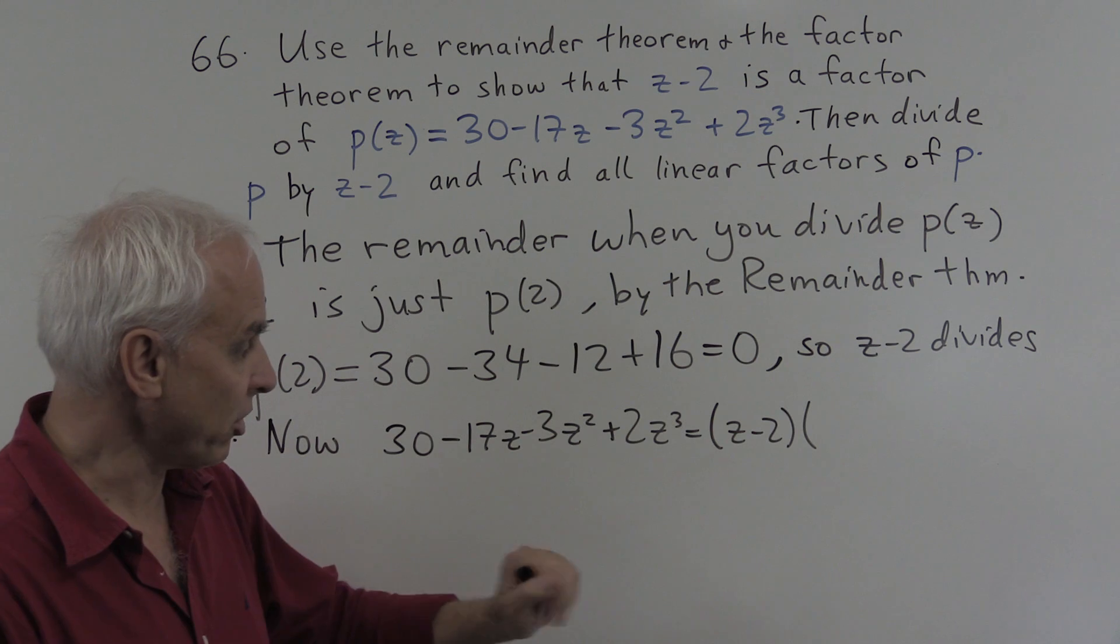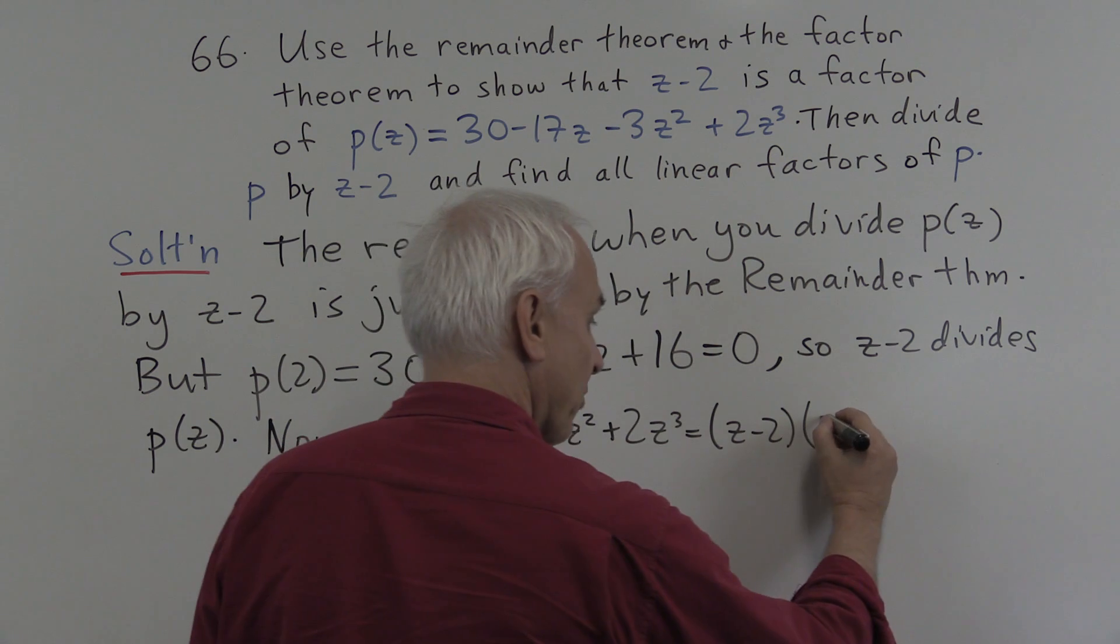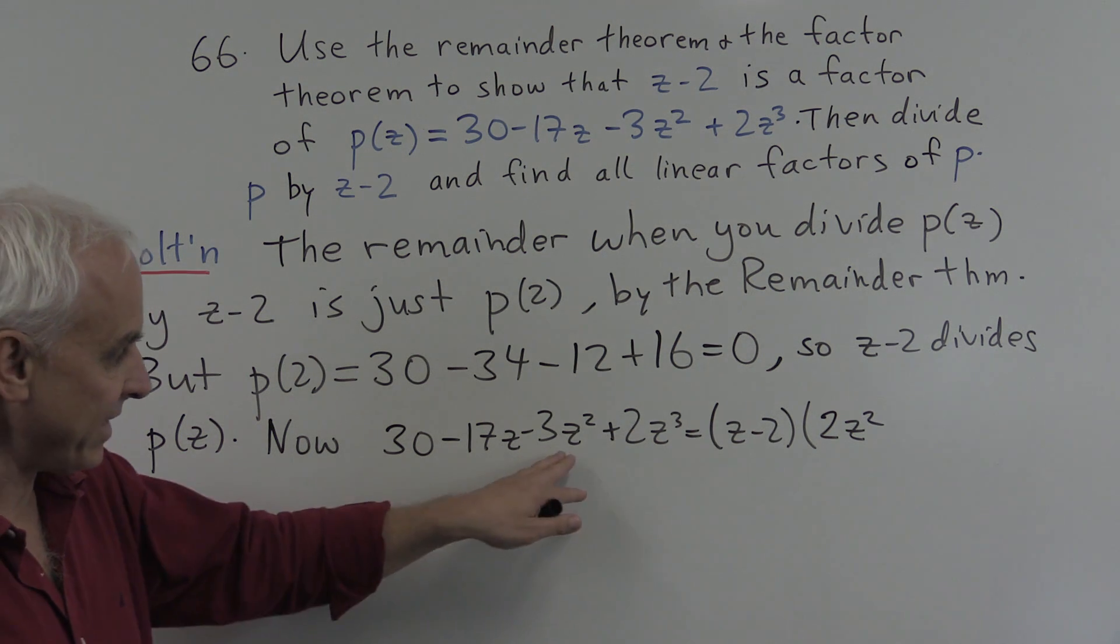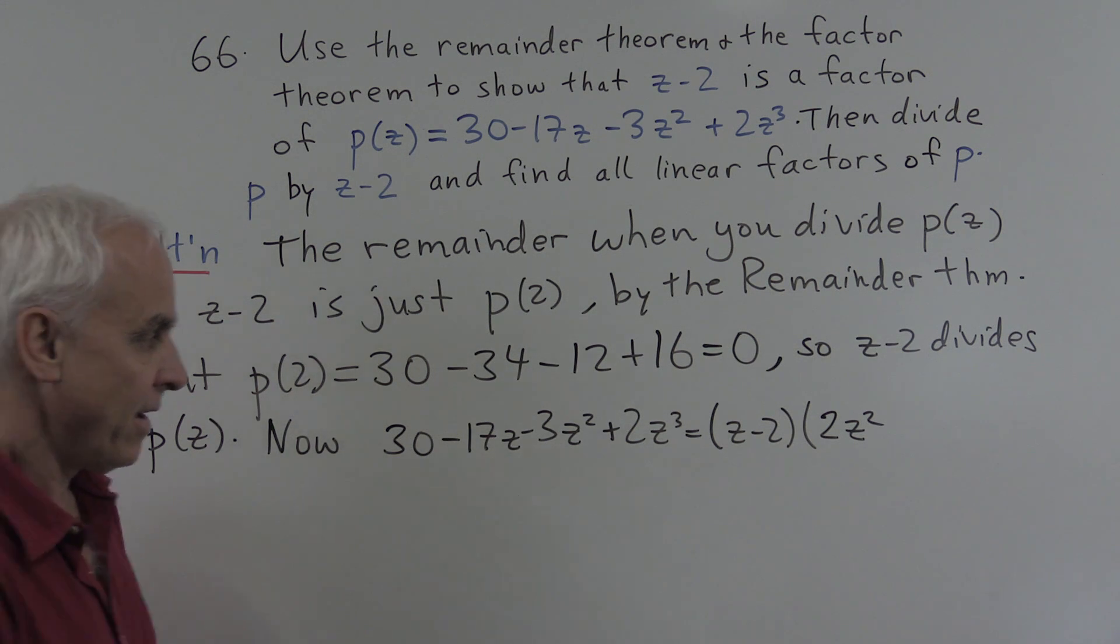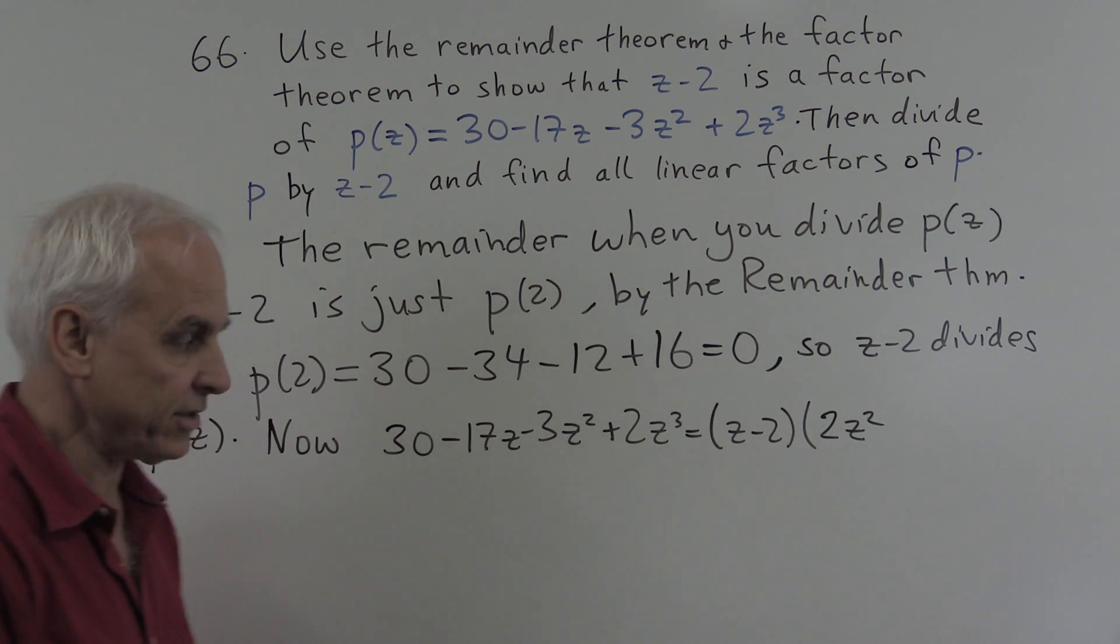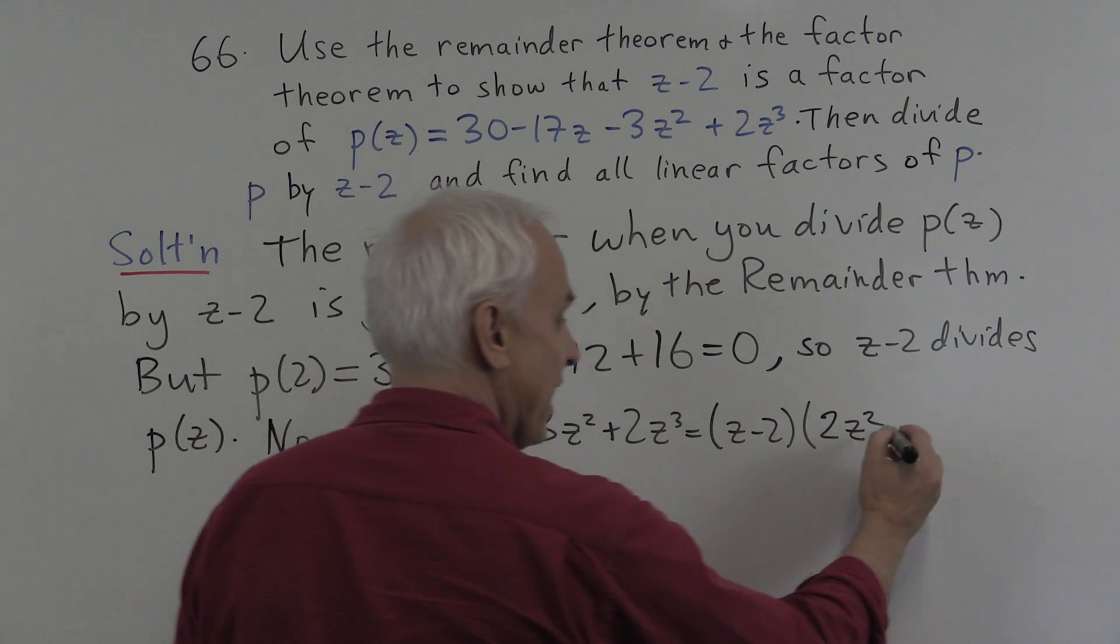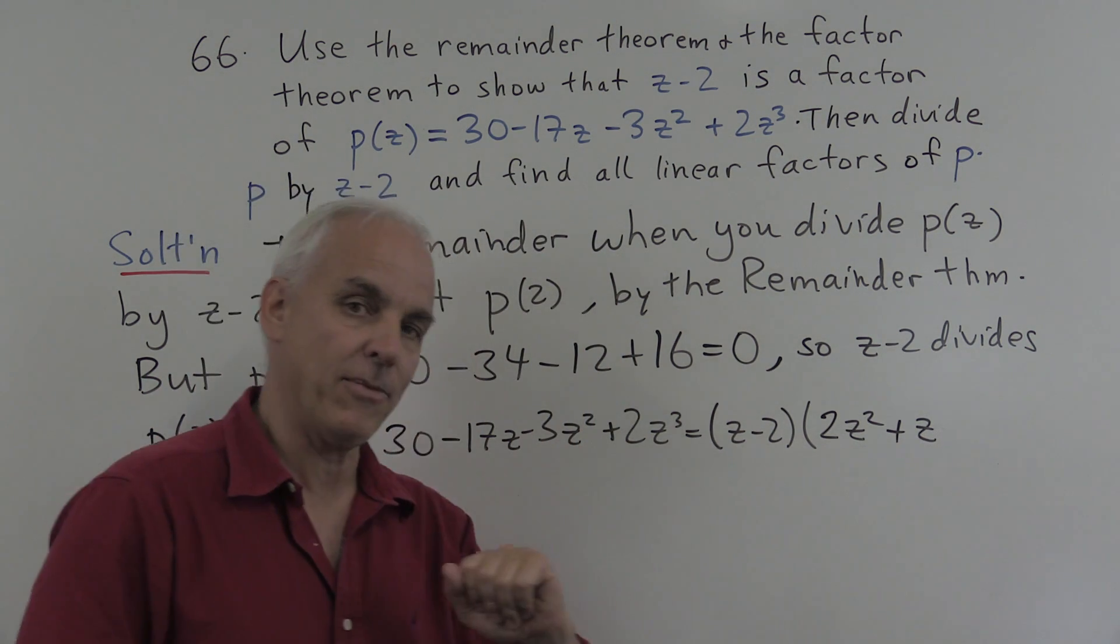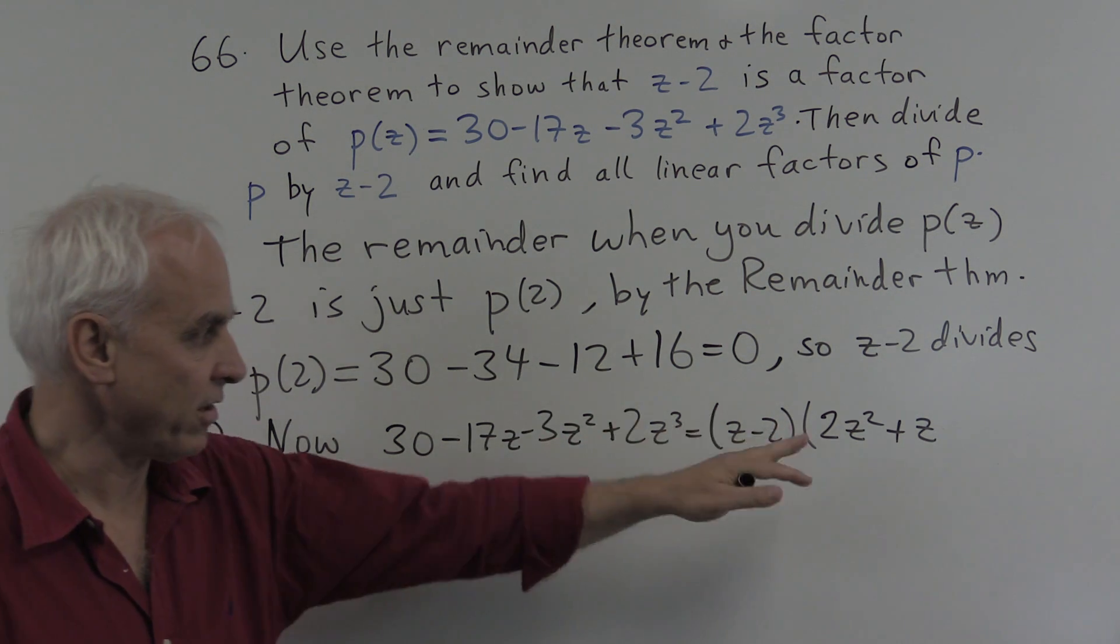Looking at the top degree terms, there's 2z³ on this side. To get 2z³ on this side, we have to put a 2z² here. All right, that'll give us 2z³. Then looking at the next highest term, minus 3z². How many z² are we going to get over here? So far, there's minus 4z² from that product. We want altogether minus 3z². So we want to add a z. So we're going to add another z² when we multiply this z times that z. So that's going to guarantee that this is minus 3z² on both sides.